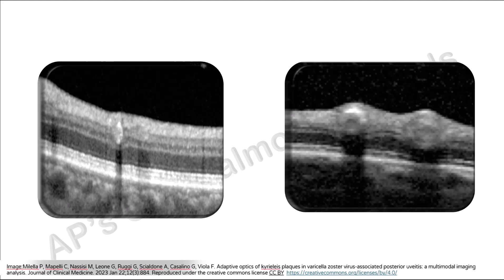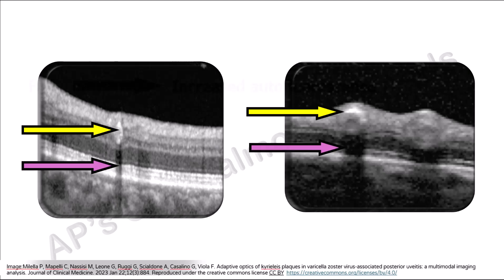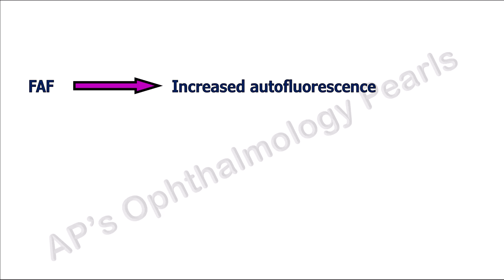Spectral domain OCT shows hyper-reflectivity in the walls of the vessels in the region of the plaques with posterior shadowing. FAF imaging shows increased autofluorescence of the vessels corresponding to the Chirilis plaques.